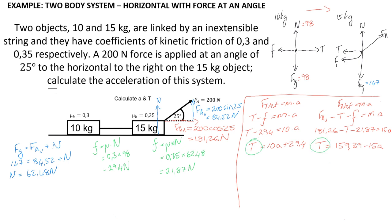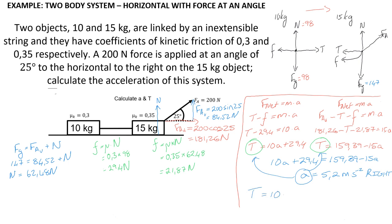Since this is the same rope, both expressions for tension must be equal. Setting them equal: 10a + 29.4 = 159.39 − 15a, and solving gives an acceleration of 5.2 m/s² to the right. Substituting back, the tension is 10 × 5.2 + 29.4 = 81.4 newtons.